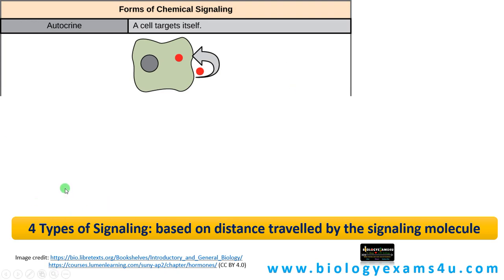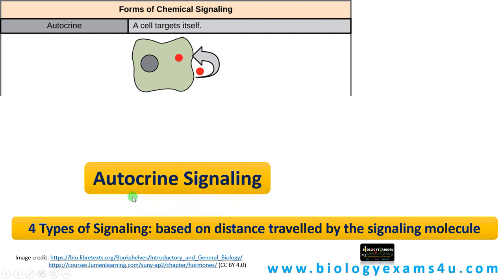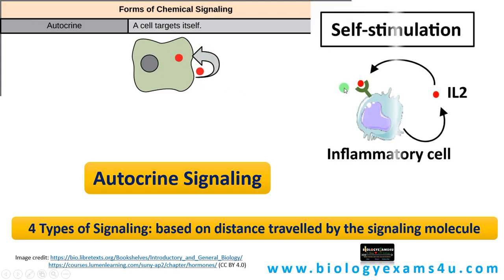The first type is autocrine signaling. As the term indicates, auto means self. In autocrine signaling, the cell targets itself. The ligand released by the cell has a receptor on the same cell itself, causing a self-activation or self-stimulation. It's very common in immune cells. For example, inflammatory cells that secrete interleukin-2 activate the cell itself for division or differentiation. In the case of T helper cells, on activation they secrete cytokines that have receptors on the T helper cell itself, causing its division and differentiation.